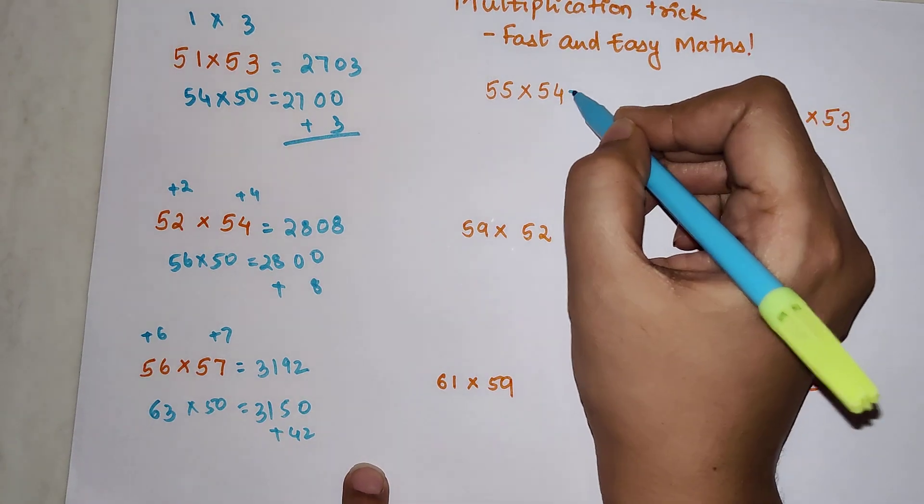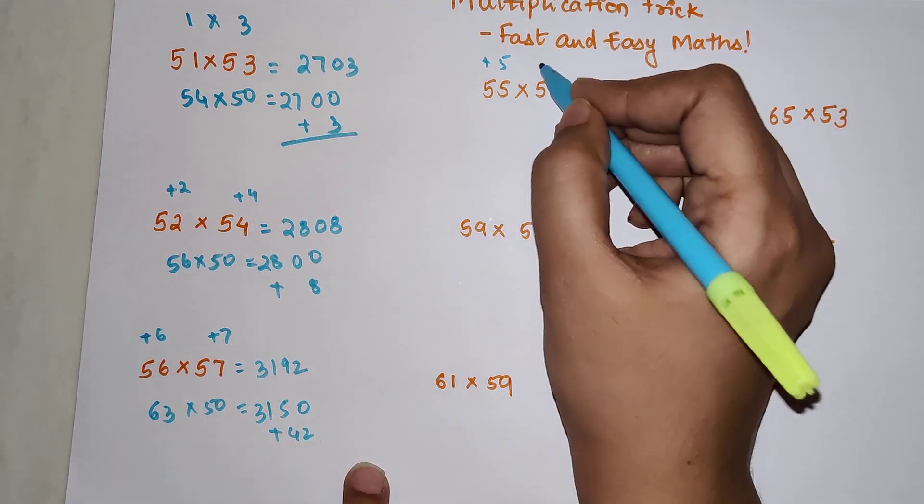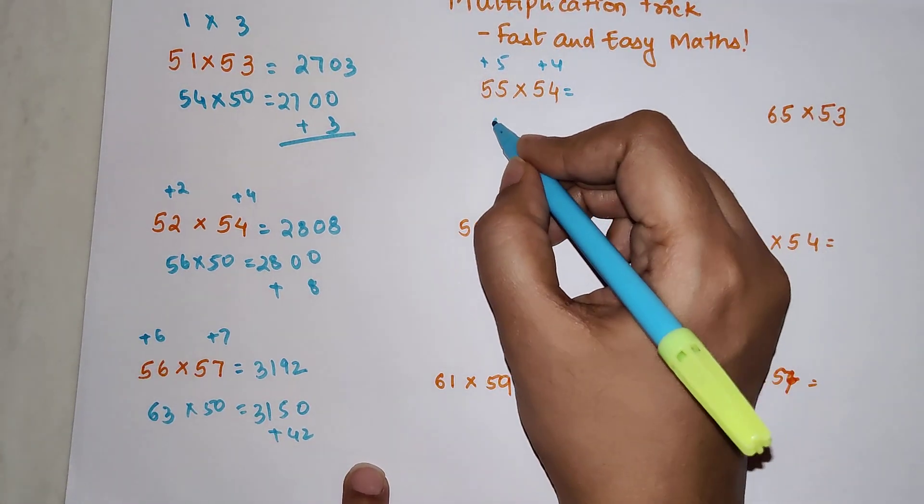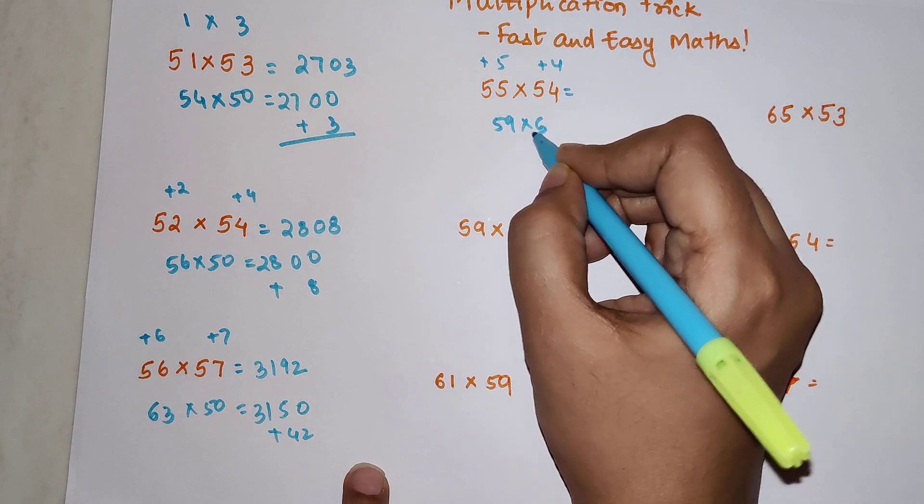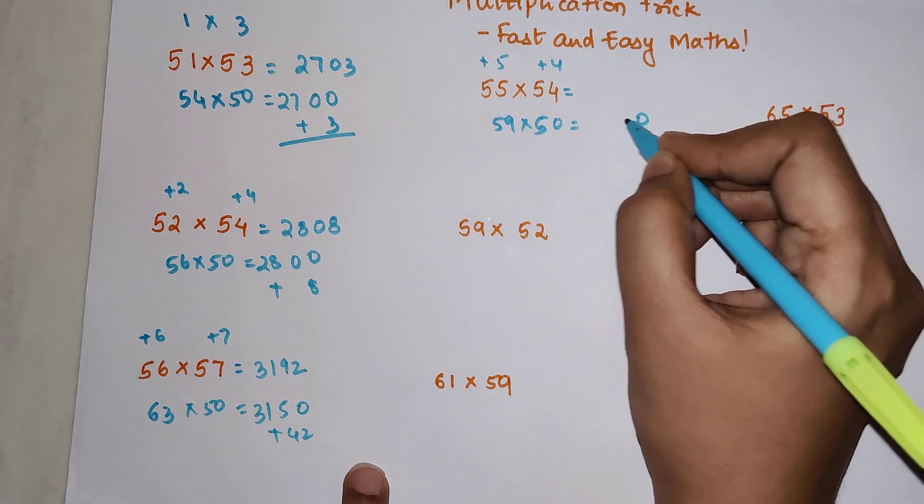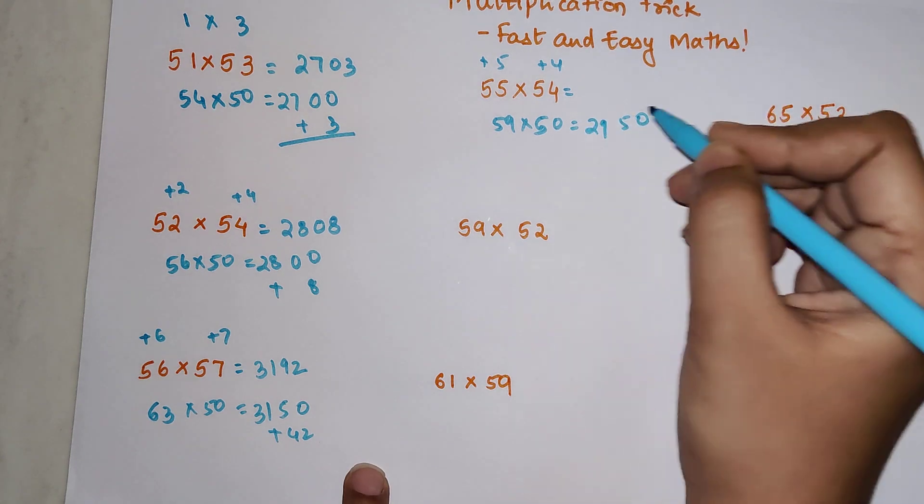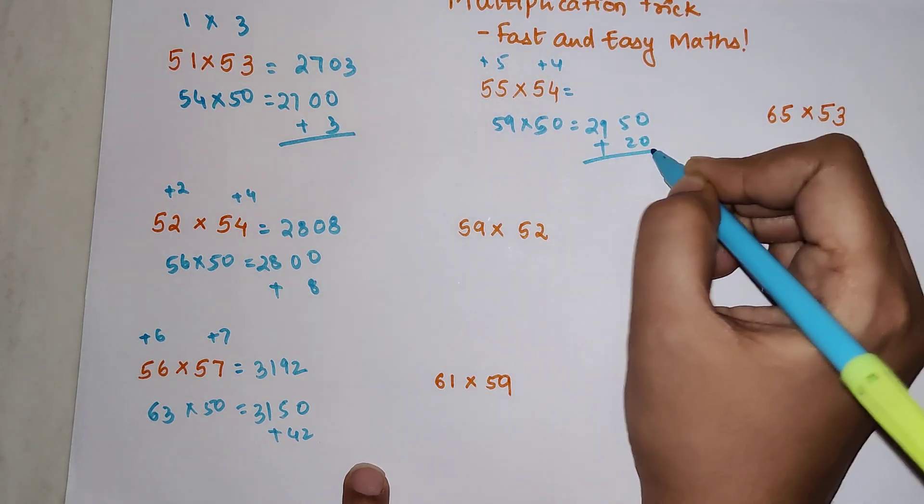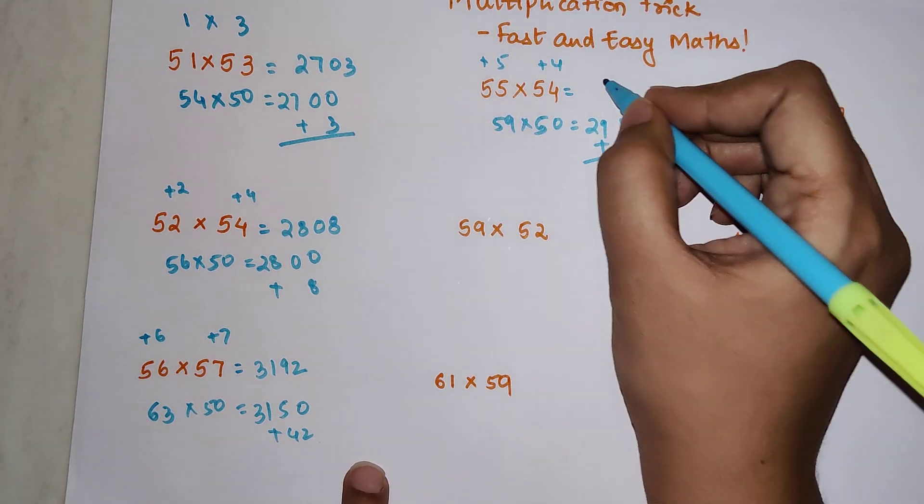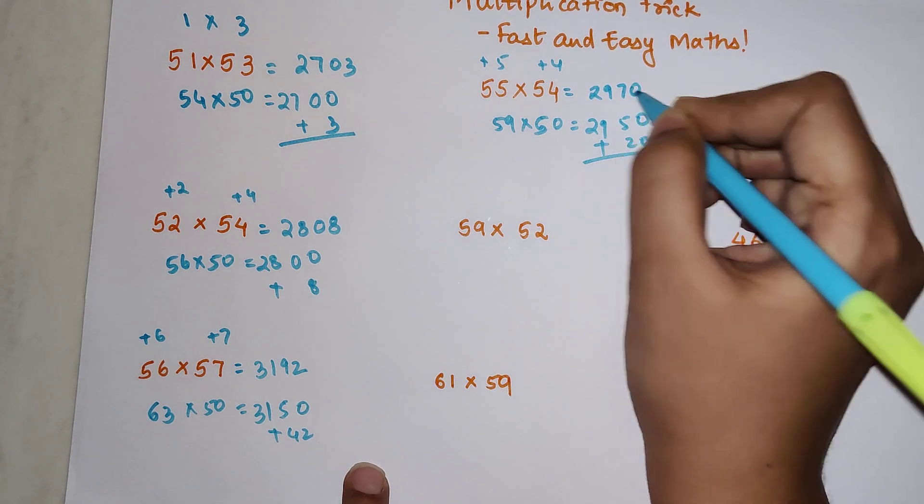For the next one, this is plus 5, this is plus 4. You add and get 59 times 50, which is 2950. To that you add 20, so your final answer becomes 2970.